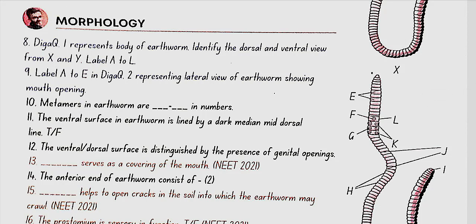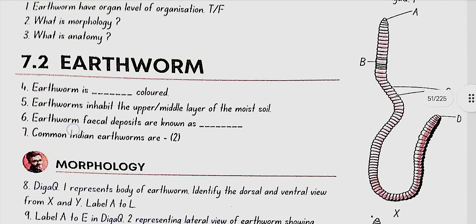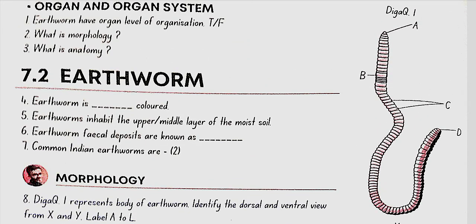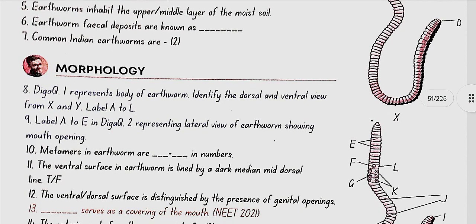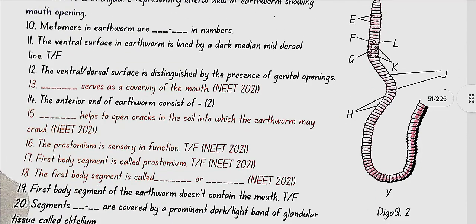Morphology. Diagram 1 represents the body of an earthworm. Identify the dorsal and ventral view from X and Y, labels A to L. X is the dorsal view where A is the prostomium, B is the clitellum, C is metameres, D is anus. Y is the ventral view where E is setae, F is female genital pore, G is male genital pore, H is transverse grooves or annuli, I is anus, J are the metameres, K is genital papillae, L is clitellum.